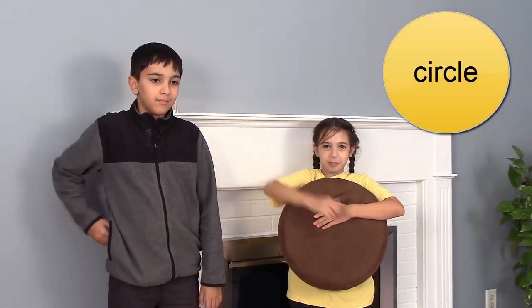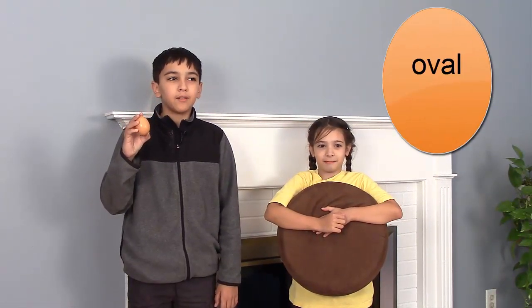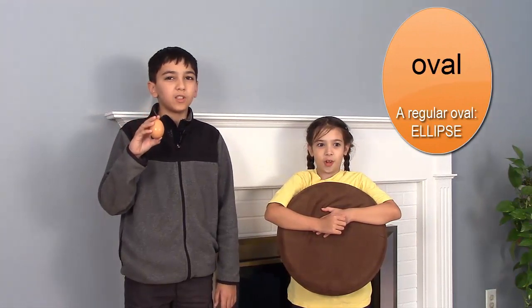Circles are round like this. Eggs aren't perfectly round. They're shaped like ovals.